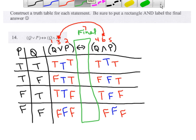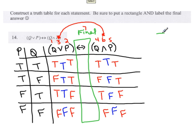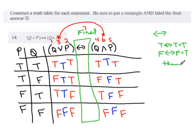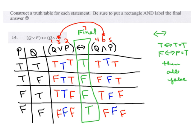Finally, evaluate the final column — the biconditional. When they're both true, it's true. When they're both false, it's true. If they're not the same, it's false. Looking at the two columns: row one — both true, so true. Row two — one true, one false, so false. Row three — not equal, so false. Row four — both equal, so true. And that's the truth table.